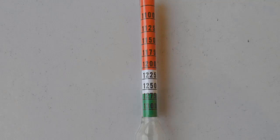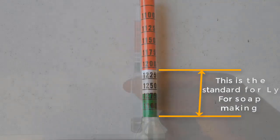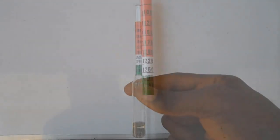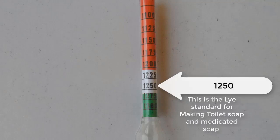Just like I said earlier, the standard for soda for soap making is between the white and the green color. Now pay attention to what I'm going to say here. When preparing lye solution for toilet soap and medicated soap, the standard reading of the hydrometer should be at the 1250 mark, that is, within the white calibration.